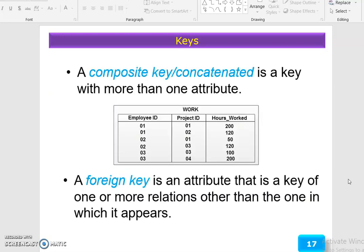A composite key or concatenated key is a key with more than one attribute. A foreign key is an attribute that is a key of one or more relations other than the one in which it appears.